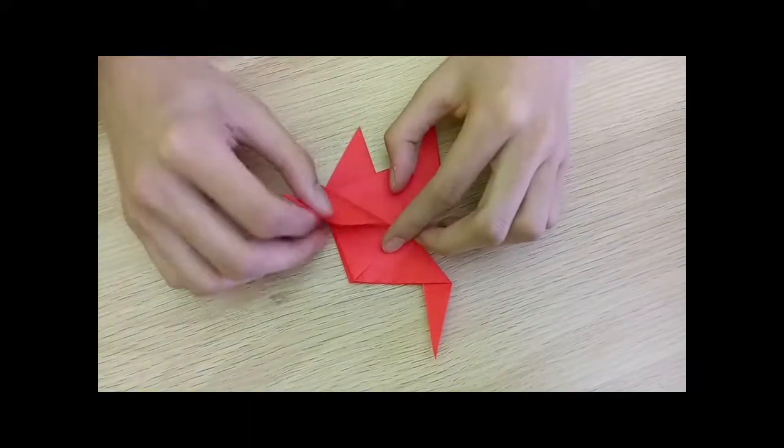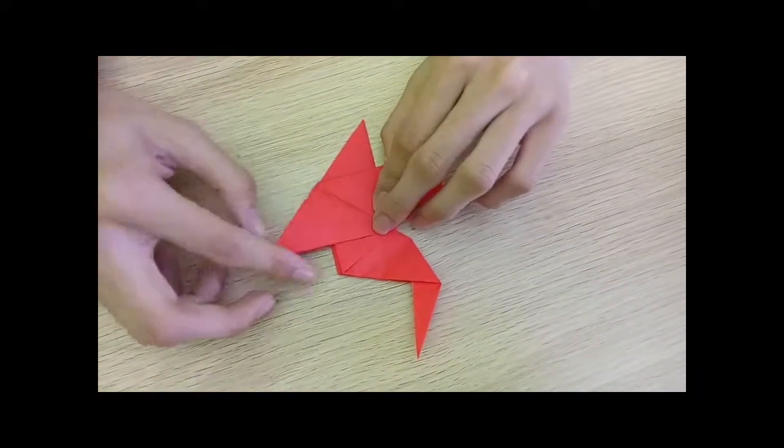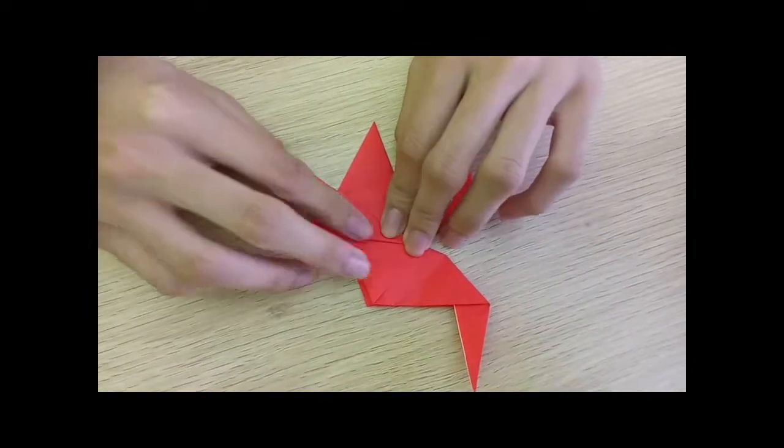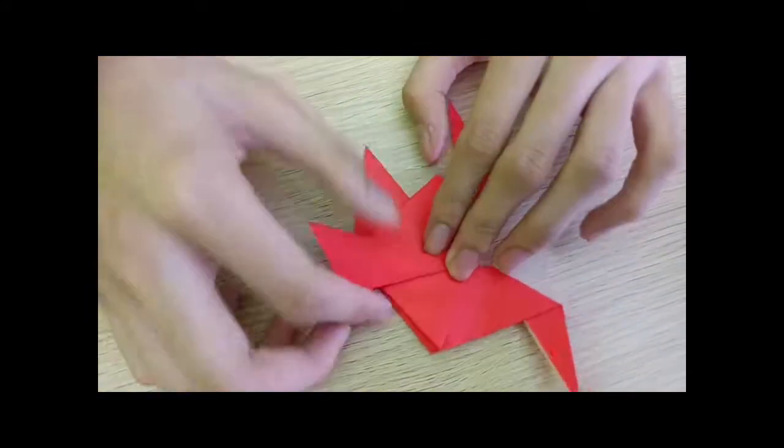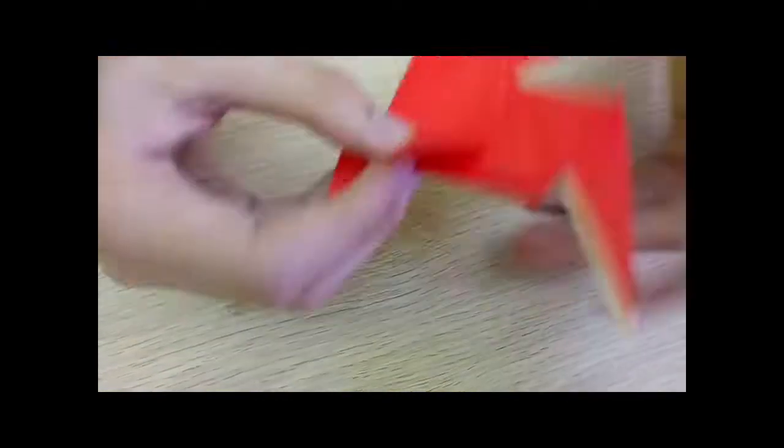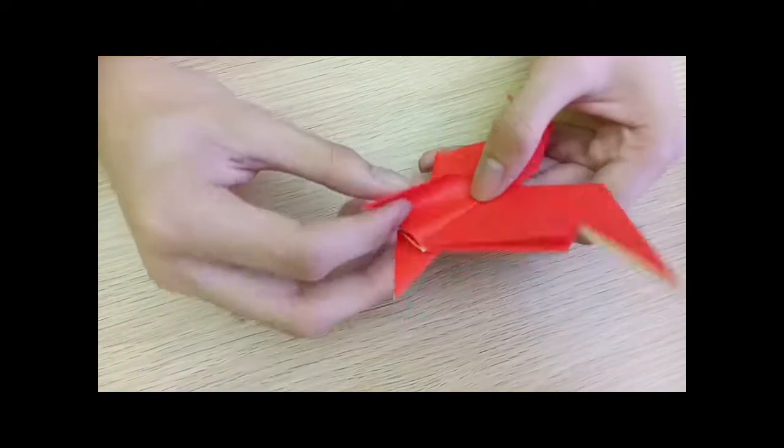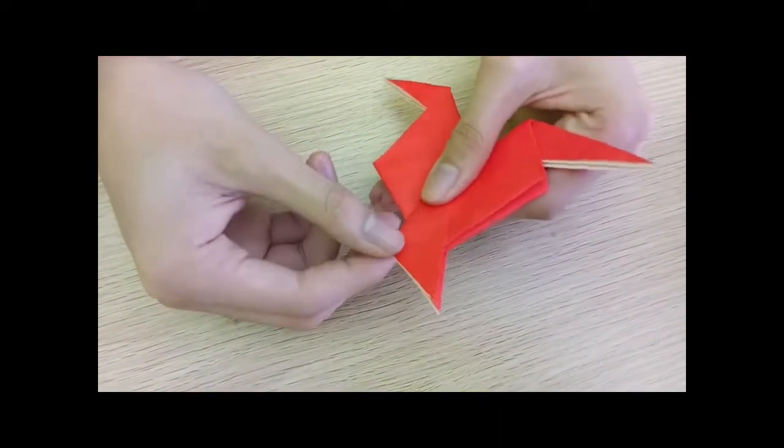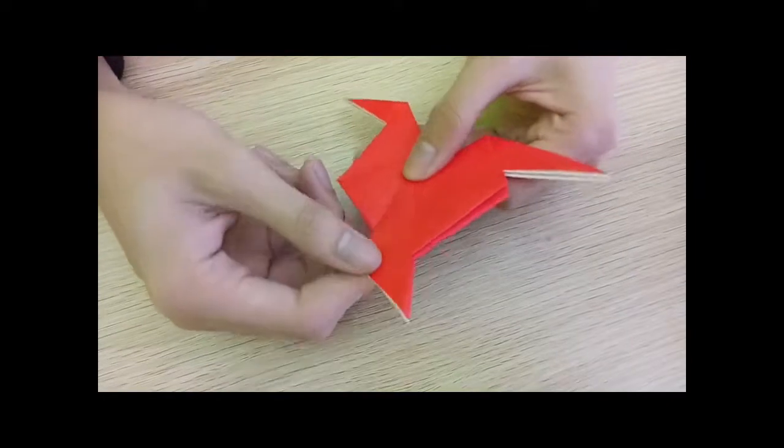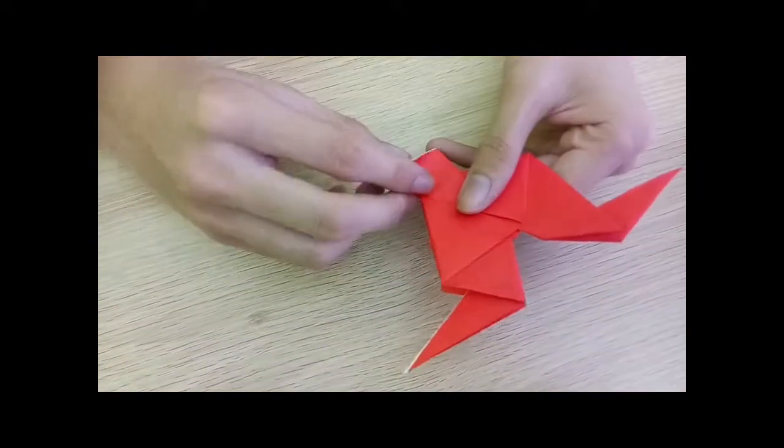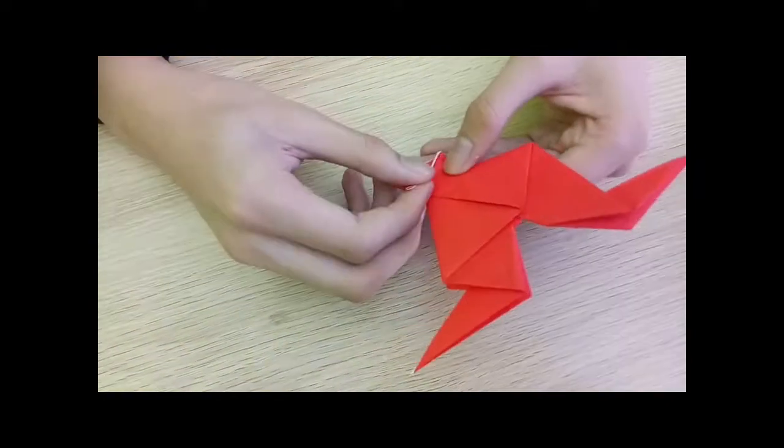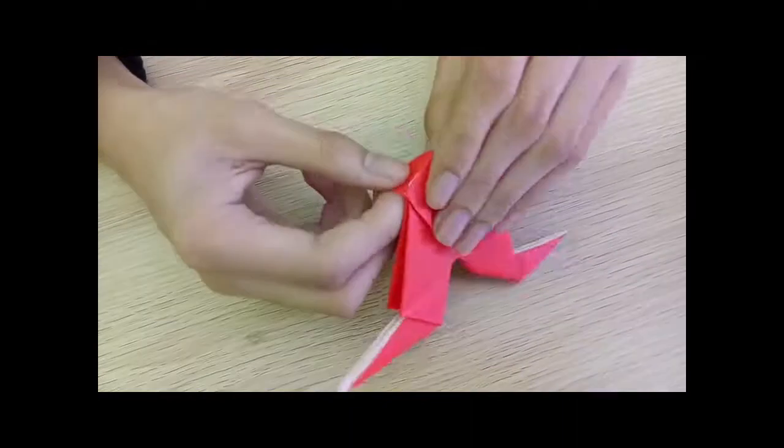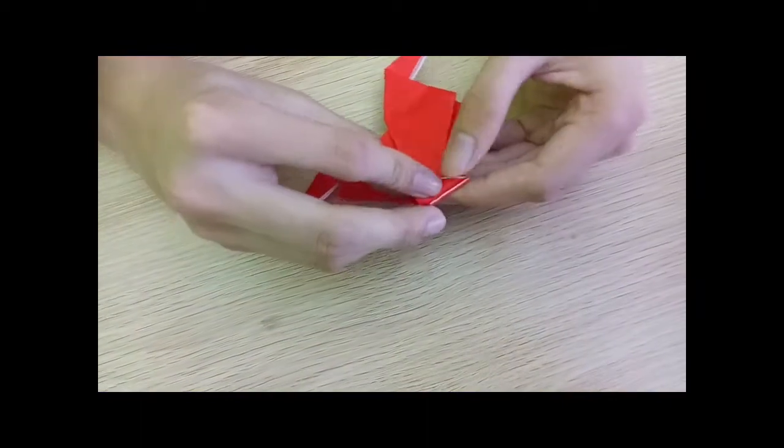So what you want to do now is bring this, which should be the leg, bring it to the halfway line. And then do the same thing but for the opposite side. Make sure it's even, and then just flatten it.